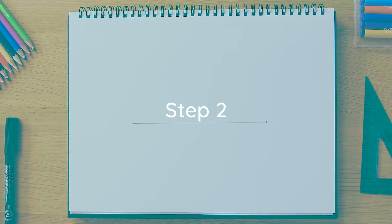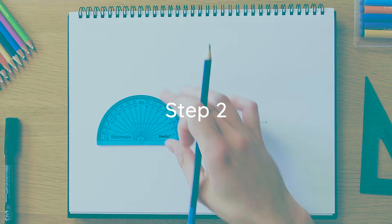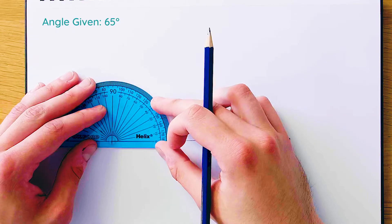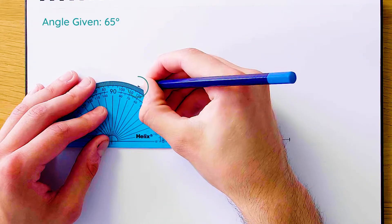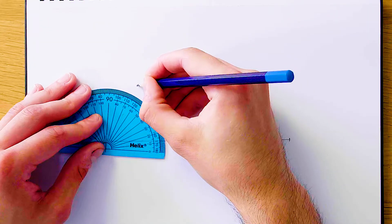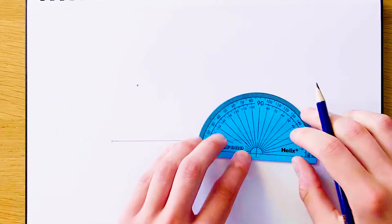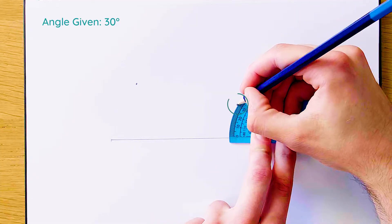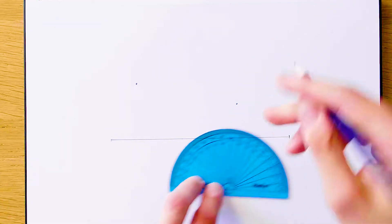For our second step, we're going to get the markings down for both of our angles. Our first angle here is going to be 65 degrees, so we're just going to put a nice mark where 65 is up here and make that nice and obvious. Then on the other side we're going to do our 30 degree angle, so here we have 30 on our protractor. Once again, nice obvious mark for yourself and for the examiner.